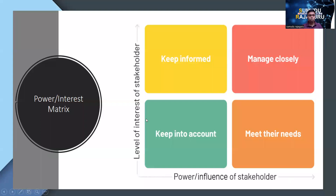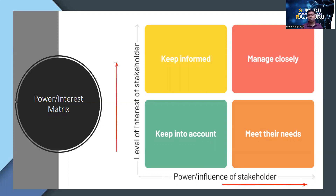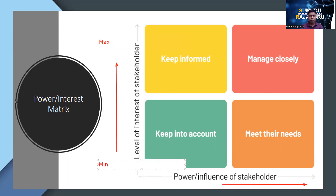You can see a picture of the Power Interest Matrix on screen. The x-axis represents the power — or influence — of stakeholders, and the y-axis represents the level of interest of stakeholders. Power increases along the x-axis direction, and interest increases along the y-axis direction. We can also mark maximum and minimum levels on both axes.